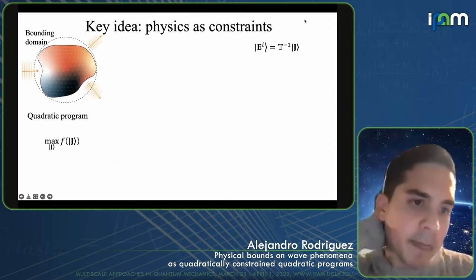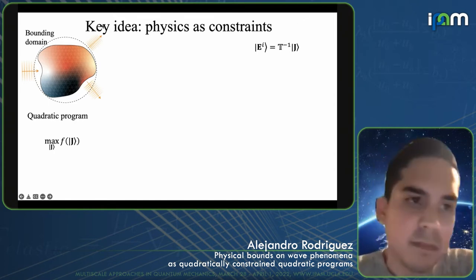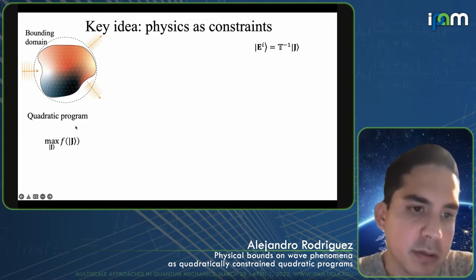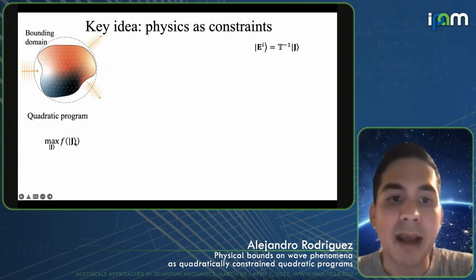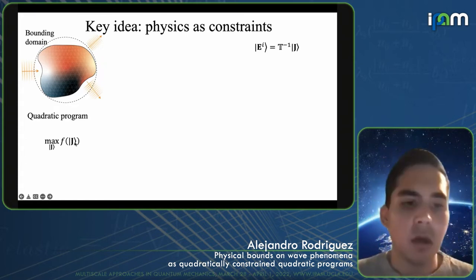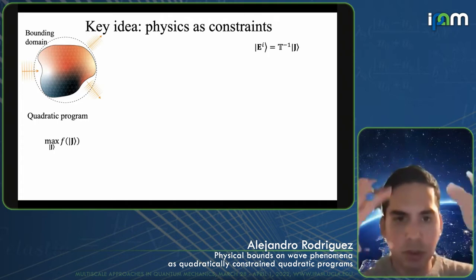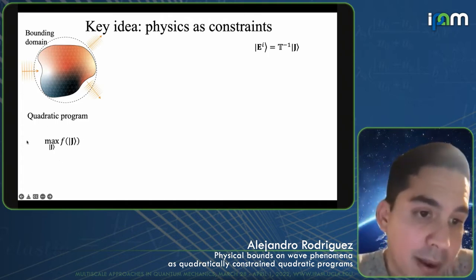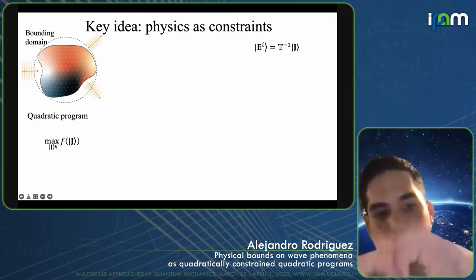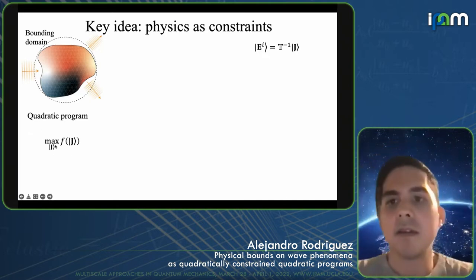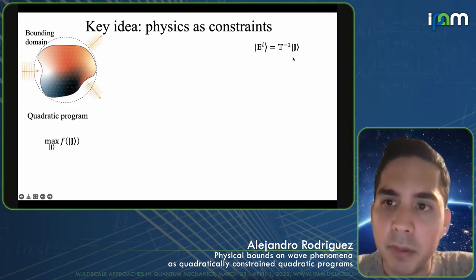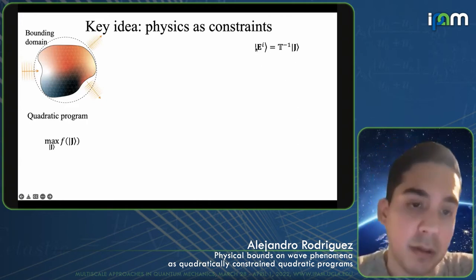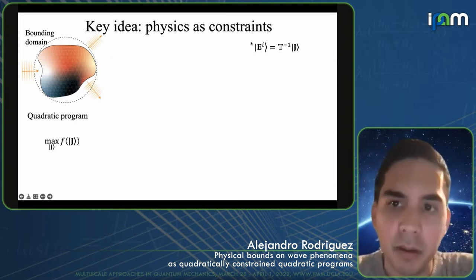The key idea behind our limits: going back to the problem of structural optimization, one way to frame the problem is to maximize an objective function with respect to the bound polarization degrees of freedom — which map to the actual structure of the potential in the system. So you could maximize F with respect to every possible bound polarization current, subject to the constraint that the bound polarization current and the incident field are related by the T operator.